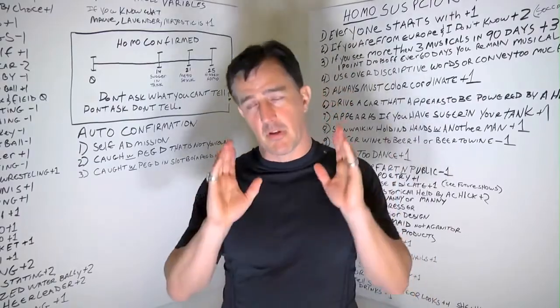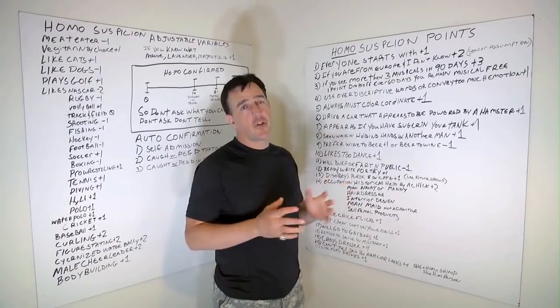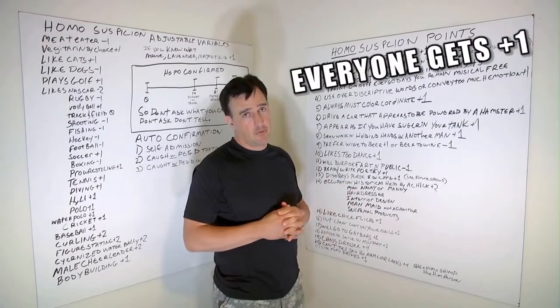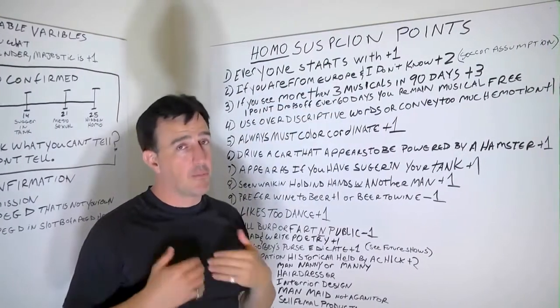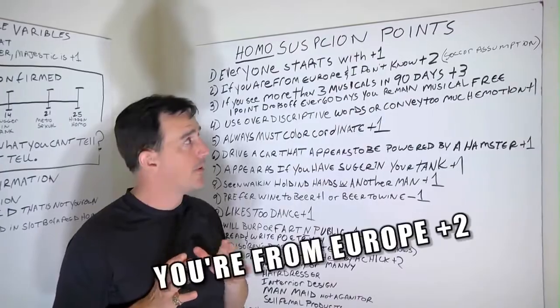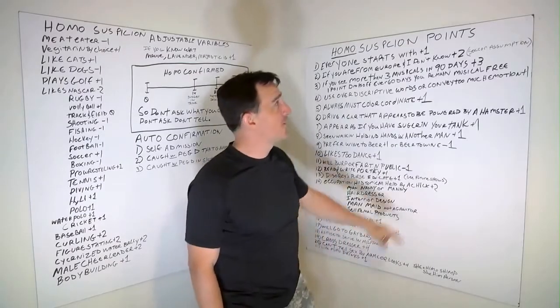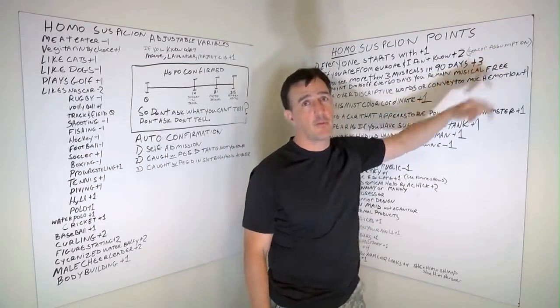Homo suspicion points is the basic breakdown. Everyone starts off with one point, so you can never be a zero. If you are from Europe, and I personally don't know you, you're going to get two points, because you're getting one point for a soccer assumption. We'll get to that later.